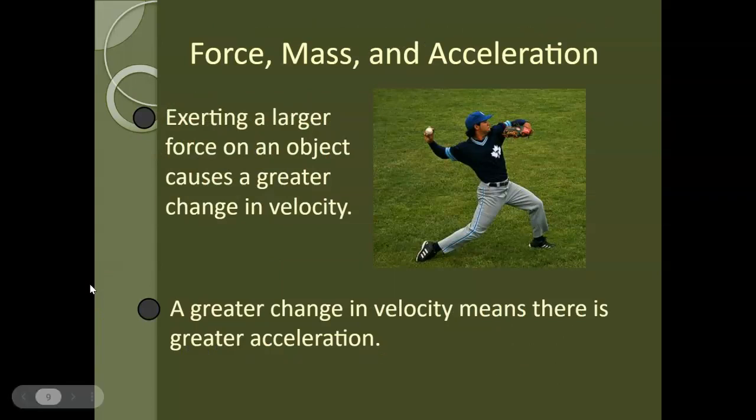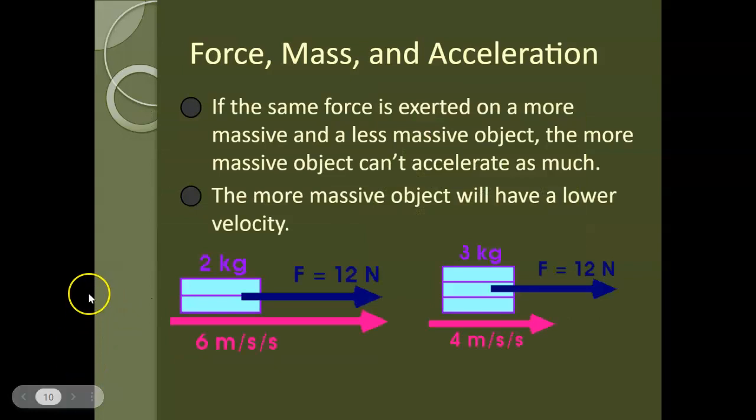So exerting a larger force on an object causes a greater change in velocity, and a greater change in velocity means that there's a greater acceleration. So if the same force is exerted on a more massive and a less massive object, the more massive object can't accelerate as much. The more massive object will then have a lower velocity. So here we've got a stack of two books weighing two kilograms and a stack of three books weighing three kilograms. They both have a force of 12 newtons applied to them, but the two kilogram books have an acceleration of six meters per second because it's got a smaller overall mass, and therefore its acceleration is higher.